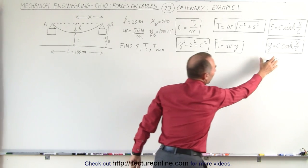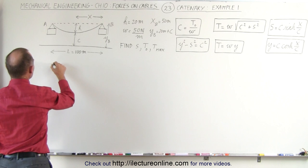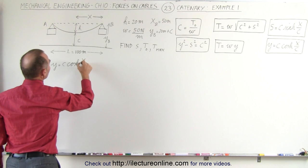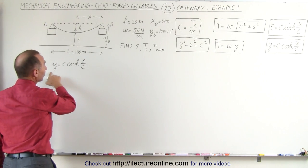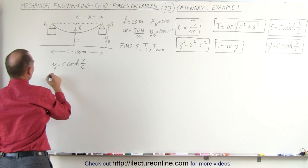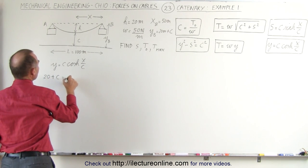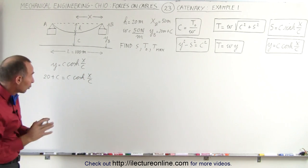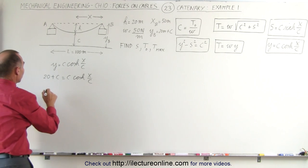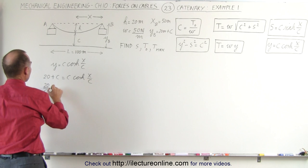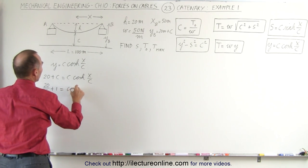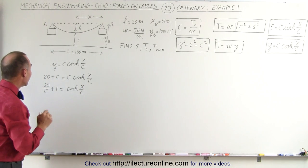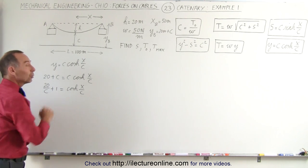We're going to start with the equation: Y equals C times the hyperbolic cosine of X divided by C. Since Y at B equals 20 plus C, we can write: 20 plus C equals C times cosh(X/C). Dividing both sides by C gives us: 20/C plus 1 equals cosh(X/C). The question is: what value of C makes the left side equal to the right side?